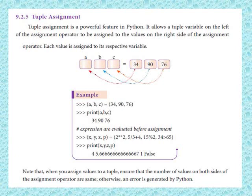We have three elements: 34, 90, 76. So how do we assign them? A is going to be 34, B is 90, C is 76. The right-hand side values are assigned to the left-hand side variables. The output would be 34, 90, 76.